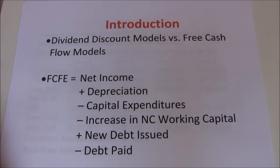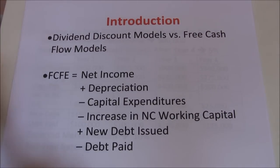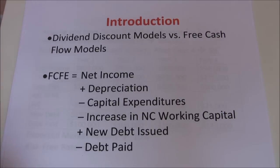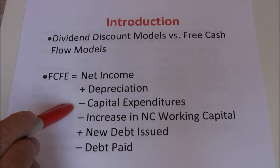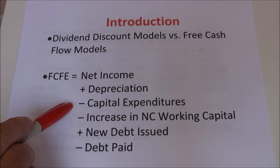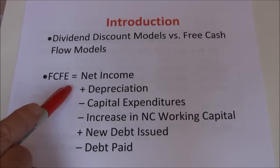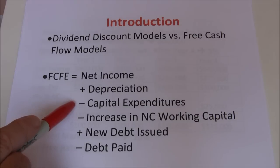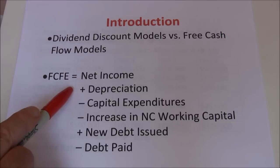The free cash flow to equity model starts out with net income — how much money did the company make. However, depreciation and amortization are non-cash expenses. They lowered our net income, but we didn't pay anything for them, so we want to add that back in. Then we want to take out capital expenditures. When we purchase property, plant, and equipment, that didn't directly lower our net income, but it was a cash outflow. From a finance perspective, we're more concerned about timing — we want to capture when that money was spent. So we capture the capital expenditures and add back the depreciation.